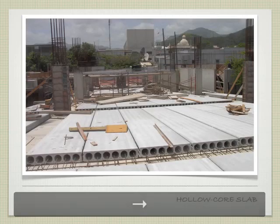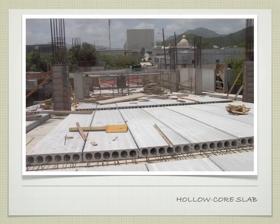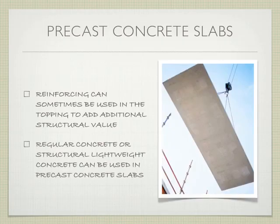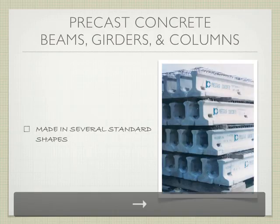Another example looking down: we have small gaps and regions where solid concrete will be poured when we pour the topping, helping tie things together above wherever our beams are. Reinforcing can sometimes be used in the topping itself to add additional structural value. You can use regular concrete or structural lightweight concrete, either in the slabs or in the topping, depending on what the engineer specifies.